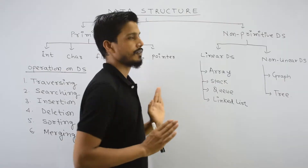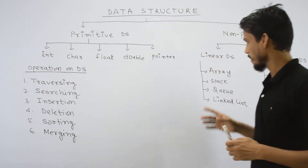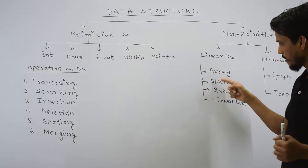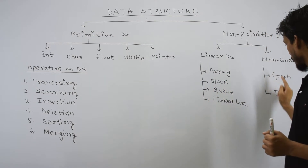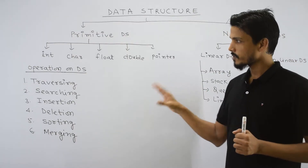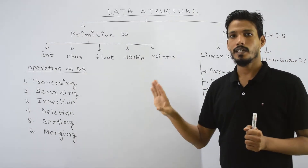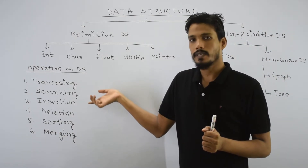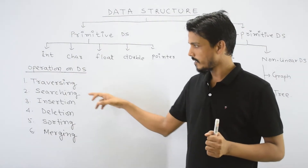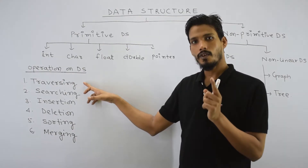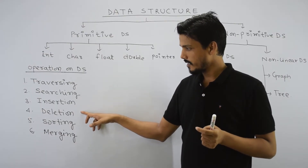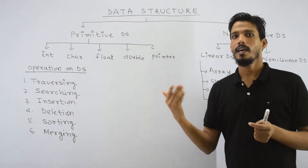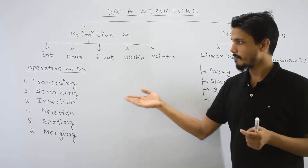This is the classification of data structure. We will discuss array, stack, queue, linked list, graph, and tree one by one. Before we start, let's discuss some operations on data structures. The operations are: traversing, searching, insertion, deletion, sorting, and merging. We will discuss these using array as an example.